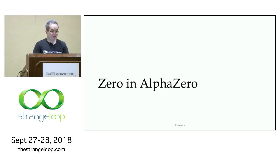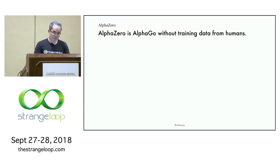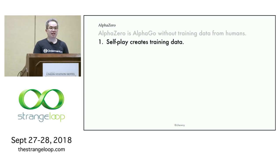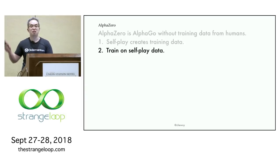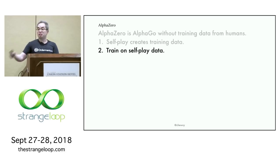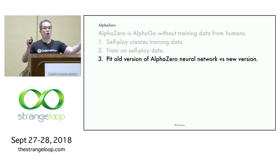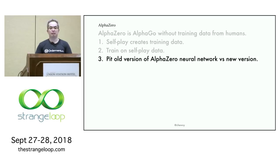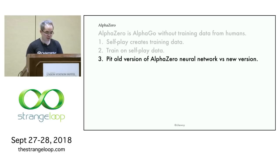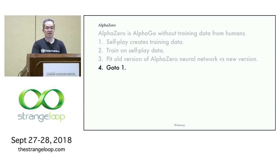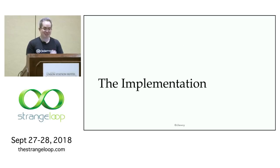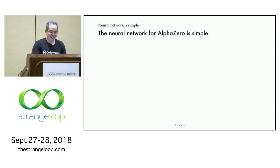We now turn our focus to AlphaZero — it's called Zero because no training data from humans is required. A neural network plays a game against itself. The game is recorded and used as training data for a new neural network. Once the new neural network is trained, you pit the old versus the new — if the new wins past a certain proportion of the time, we use the new network as the de facto network. We simply rinse and repeat.